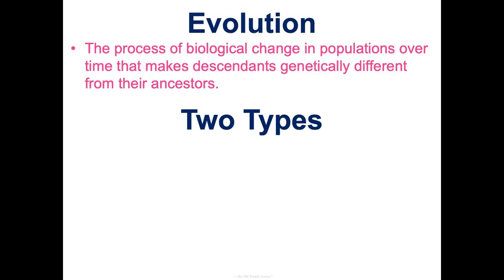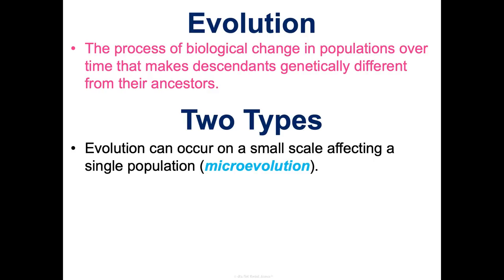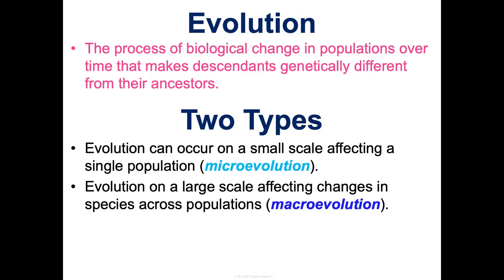There are two overarching categories of evolution. Microevolution is on a small scale — just looking at evolution in a single population, a group of organisms living in the same place. Macroevolution is large scale — looking at how an entire species has evolved over time. We'll get into patterns of macroevolution in concept two, but today a lot of what we'll talk about will be micro.